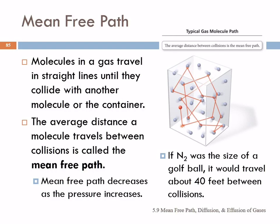That mean free path is going to decrease as the pressure increases. When the pressure increases, the particles are closer together and they're going to bump into each other and to the walls more frequently. Just so you get an idea of how large the mean free path is, if we had nitrogen and it was the size of a golf ball, it would go about 40 feet before it ran into something. That's quite a bit.